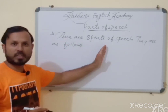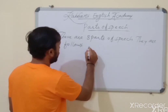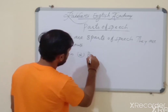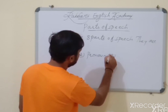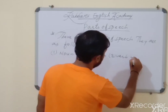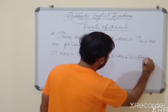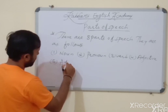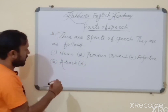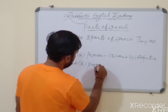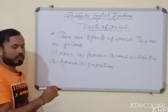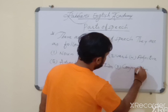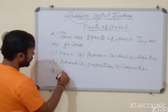So, how many parts of speech are there in English? Eight. They are as follows. Number one: noun. Number two: pronoun. Number three: verb. Number four: adjective. Number five: adverb. Number six: preposition. Number seven: conjunction. Number eight: interjection.